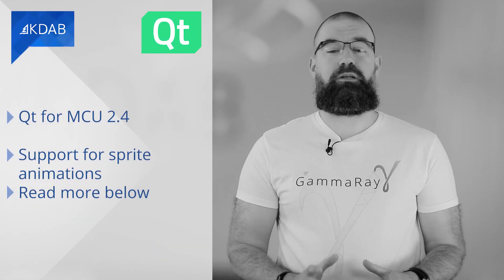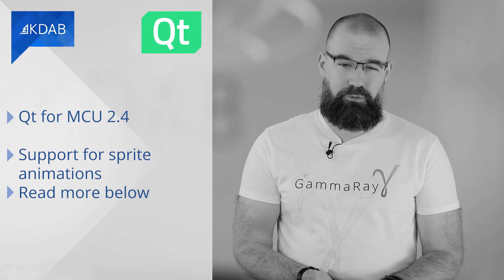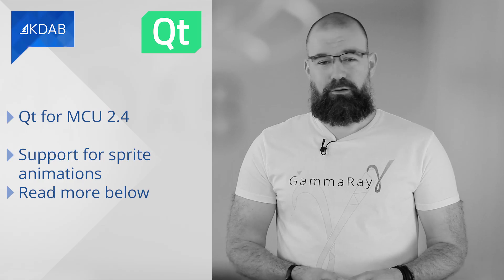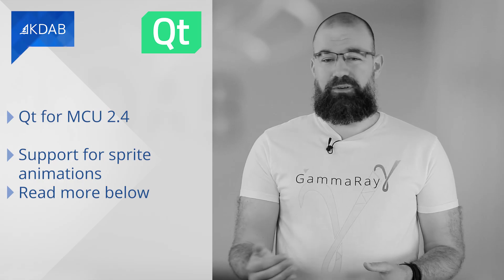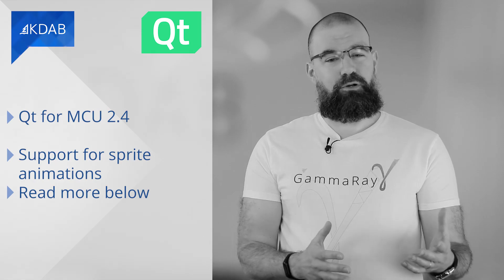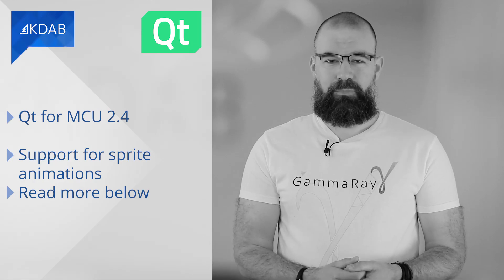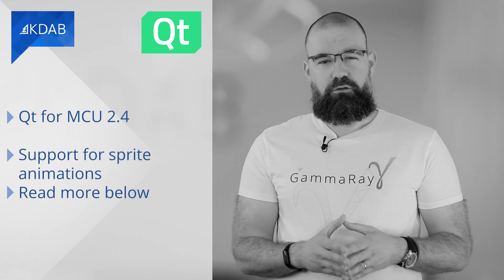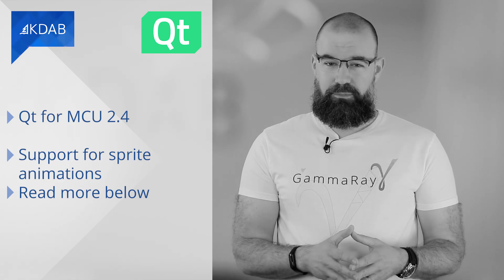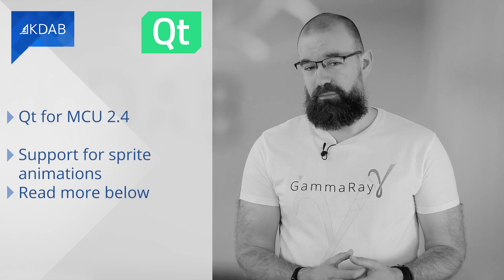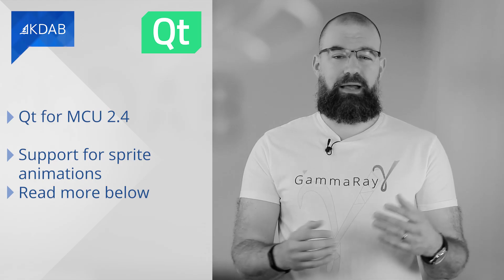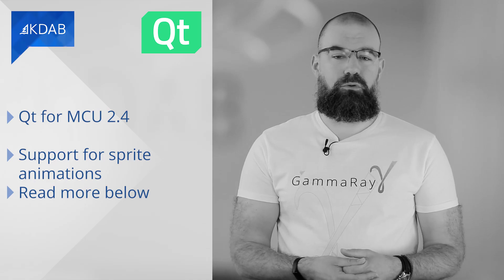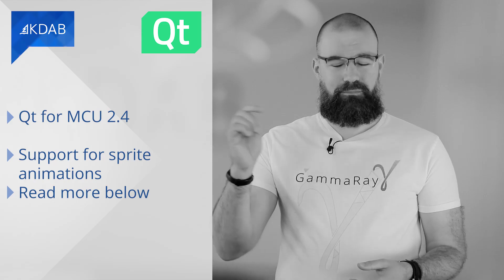And last but not least, the Qt for MCU 2.4 release includes several new features and improvements, including support for sprite animations, a more flexible code generation and build process, among others. Animated Sprite and Animated Sprite Directory are new Qt Quick Ultralight types that enable playback of pre-rendered video frames with animation speed control and compile-time optimizations for reducing ROM usage. Read more about all the updates below the video.